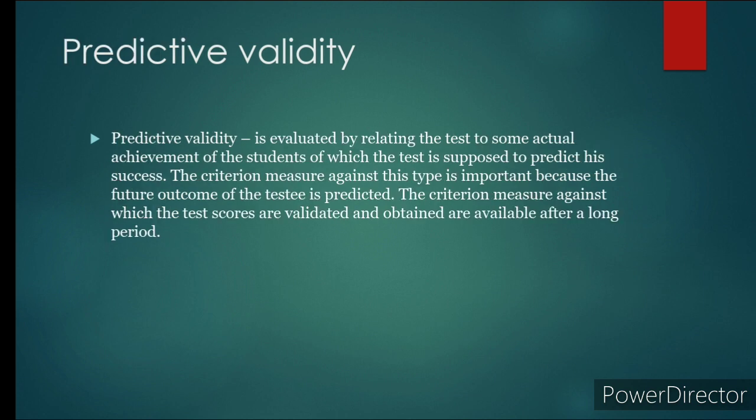Predictive validity is evaluated by relating the test to some actual achievement of the student which the test is supposed to predict. The criterion measure against this type is important because the future outcome of the test is predicted. The criterion measure against which the test scores are validated are obtained and available after a long period.